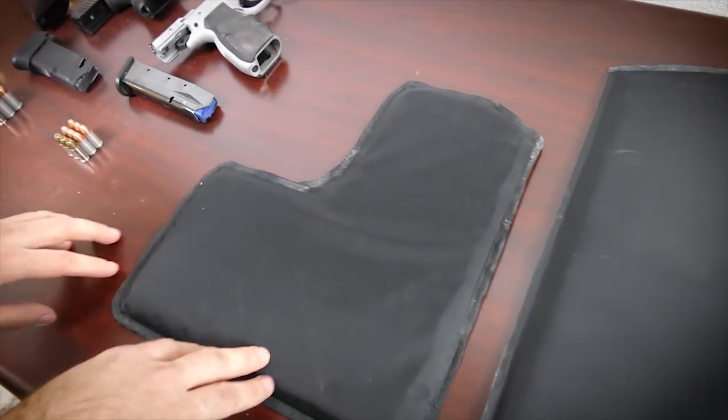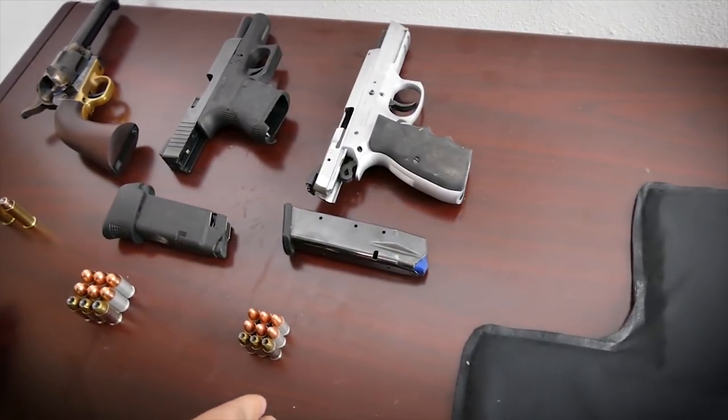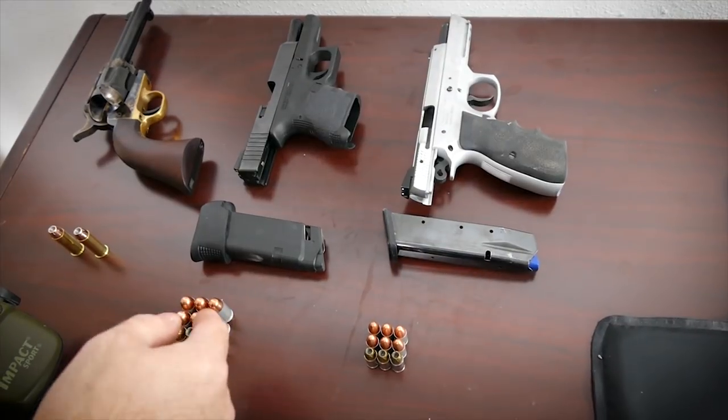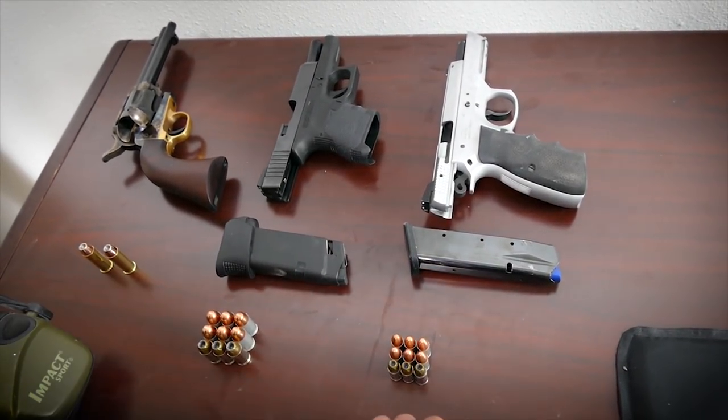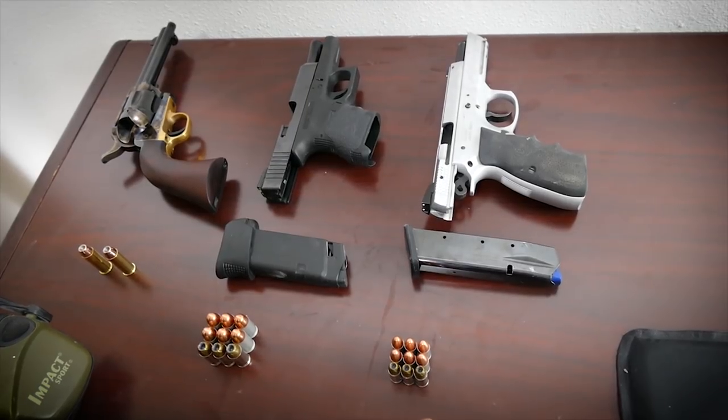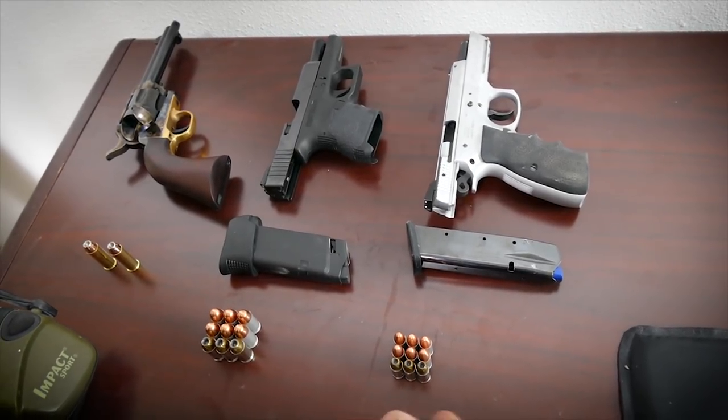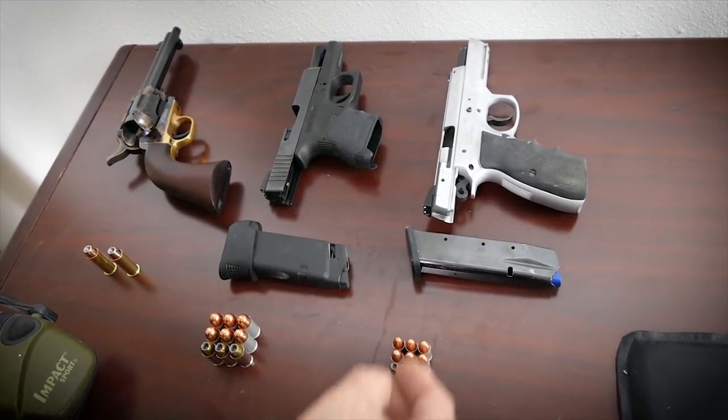Now, we're going to be shooting 9mm, 45, and 44 magnum. For the 9mm, we're going to be shooting Golden Sabre plus P ammunition and some cruddy ball ammo out of a TriStar T120.